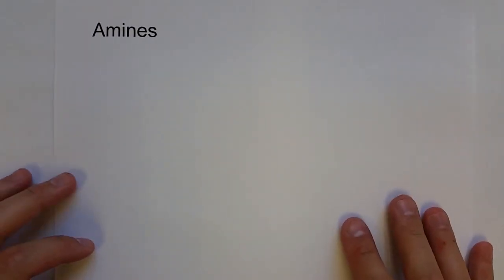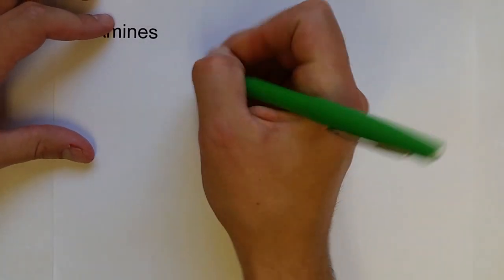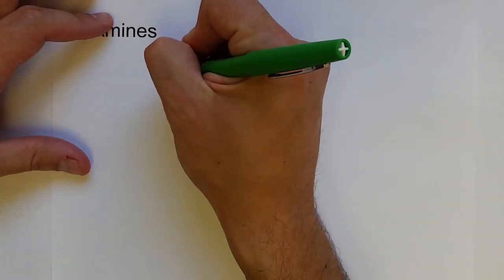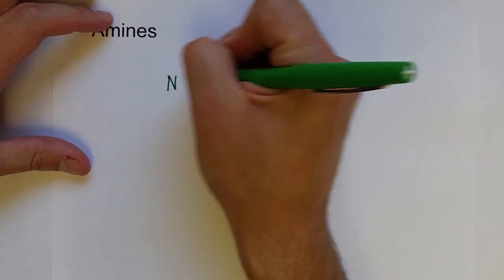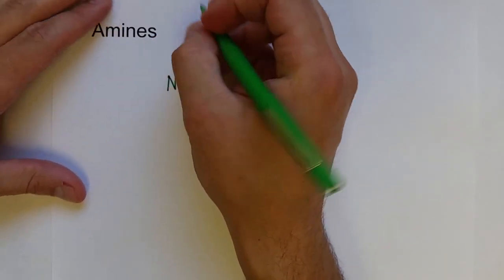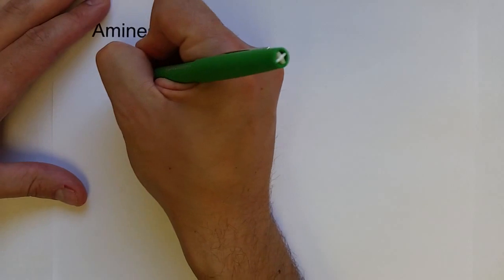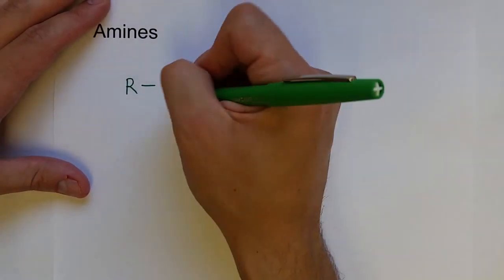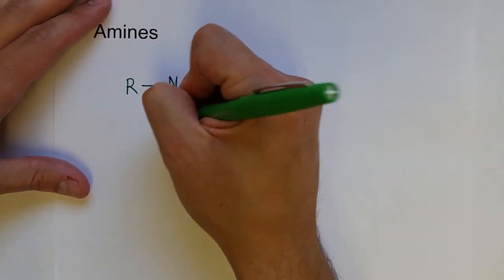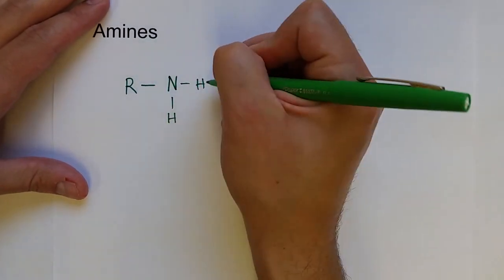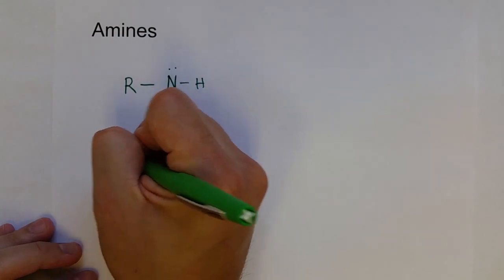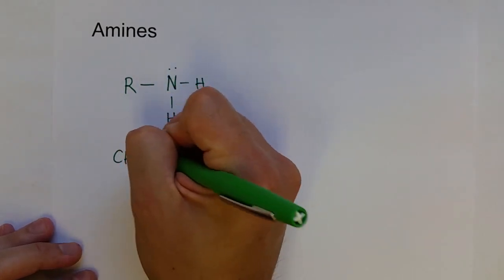The next two functional groups are going to contain nitrogen atoms, and these are amines and amides. An amine is when a nitrogen is connected to a hydrocarbon. We know that nitrogen is going to have three bonds, so it's connected to a carbon and only one carbon, and it's also going to be connected to hydrogens. An example of this would be CH3-NH2, methyl amine.